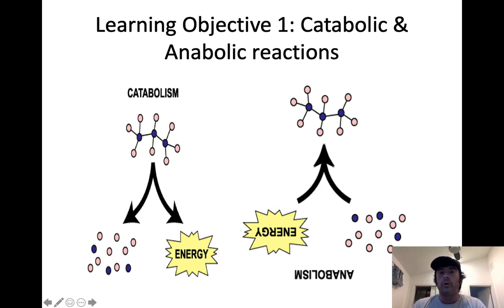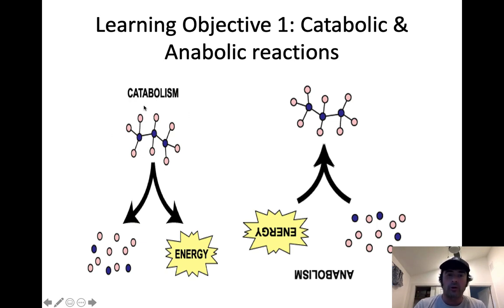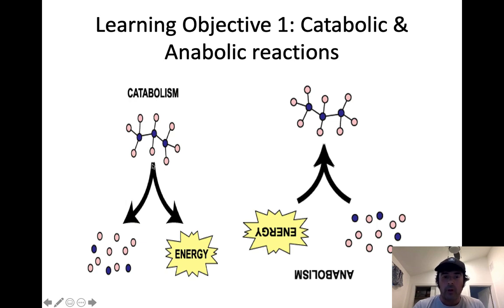I want to review what's meant by catabolic and anabolic reactions. Catabolic reactions, as we've already talked about, are reactions in which larger molecules are broken into smaller molecules with the release of energy. So when catabolic reactions occur, what we're doing is oftentimes we're breaking covalent bonds, and we're releasing these smaller particles, but because energy is held within covalent bonds, we're also releasing energy.